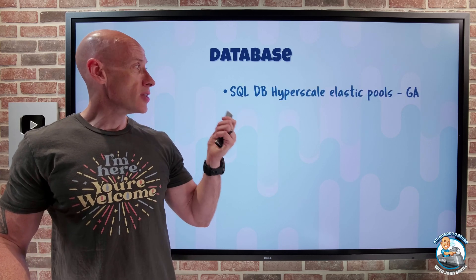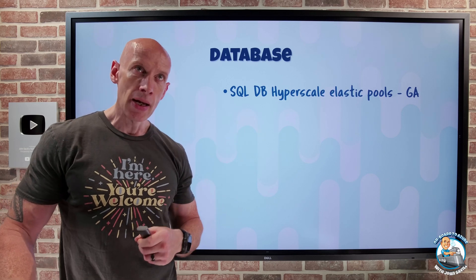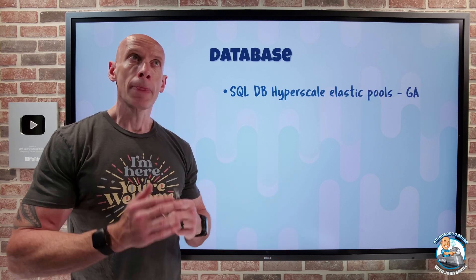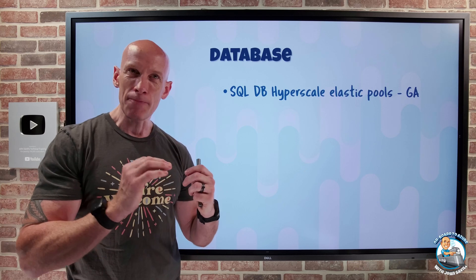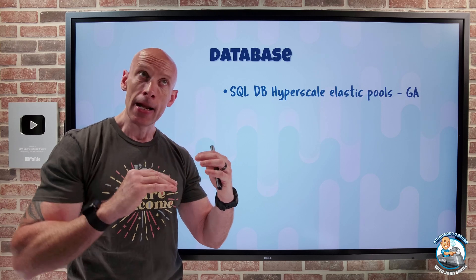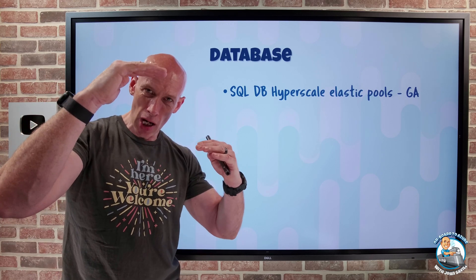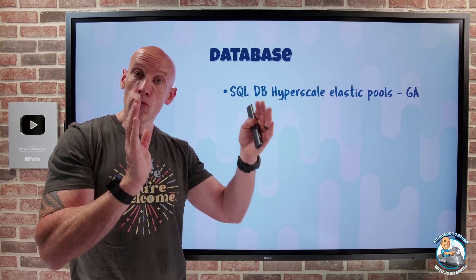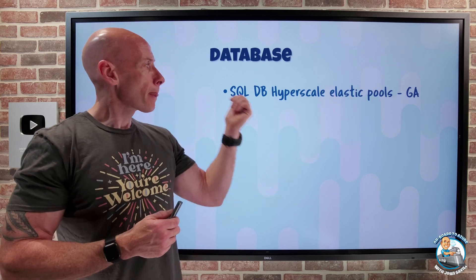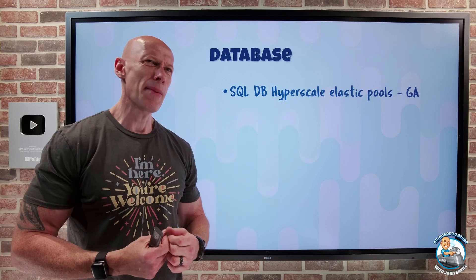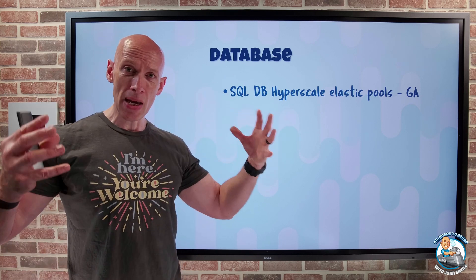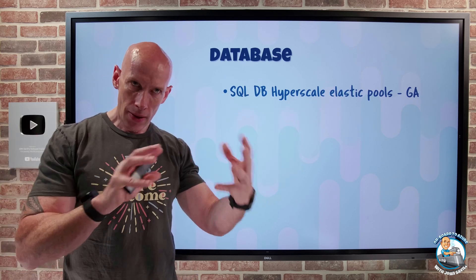On the database side, SQL Database Hyperscale Elastic Pools have gone GA. Elastic Pools let me share resources across a number of databases. If I have databases with different seasonality — peak times and slower times — I can place databases with complementary seasonality so that when one has high usage the other is low, and overall I use less resource than if each had its own dedicated allocation. Hyperscale is the largest scale, highest performance tier, separating compute units from page servers for independent scaling. Now I can share that group of resources for really high-performance workloads.